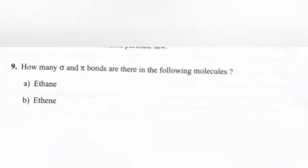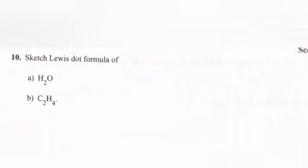Question 9: How many sigma and pi bonds are there in the following molecules? (a) Ethane: 7 sigma bonds and 0 pi bonds. (b) Ethene: 5 sigma bonds and 1 pi bond.